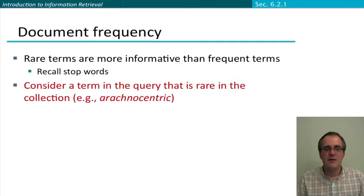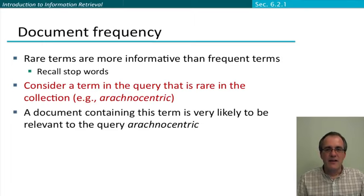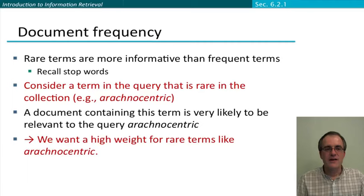So consider a term in the query that is very rare in the collection, perhaps something like arachnocentric. If someone had typed that word into their query and we can find a document that contains the word arachnocentric, it's very likely to be a document that the user would be interested in seeing. So we want to give a high weight in our match score for rare terms like arachnocentric.